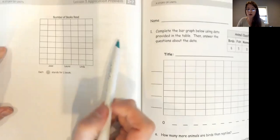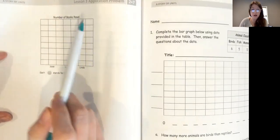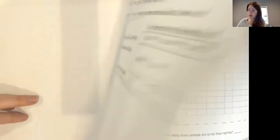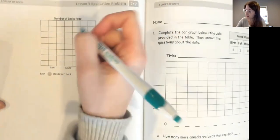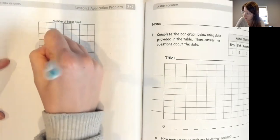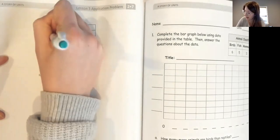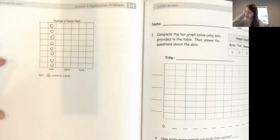So on my chart - my graph, I'm sorry - I know that each circle is gonna stand for one book. So if I know that Jose read eight books, I'm going to draw eight circles to represent that: one, two, three, four, five, six, seven, eight.